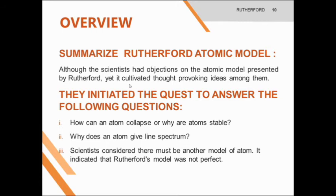Overview. To summarize Rutherford's Atomic Model: although scientists had objections on the atomic model presented by Rutherford, yet it cultivated thought-provoking ideas among them. They initiated the quest to answer questions such as: how can an atom collapse, or why are atoms stable? And why does an atom produce a line spectrum? Scientists considered that Rutherford must amend the model of an atom, indicating that Rutherford's model was not perfect.